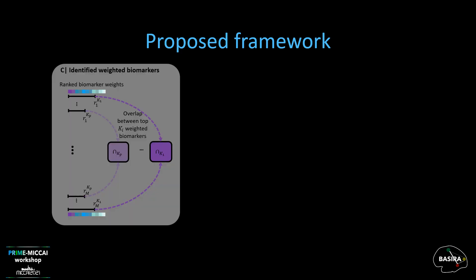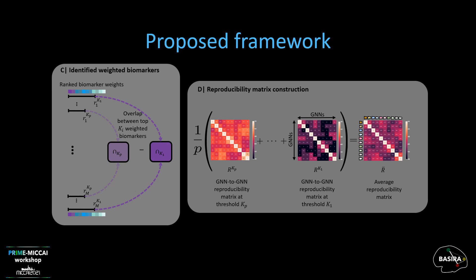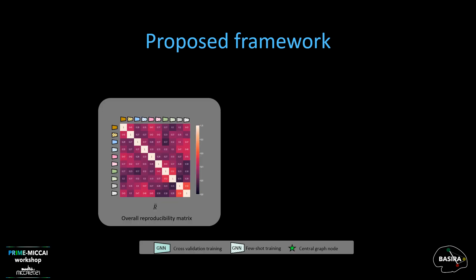The reproducibility measure needs to reflect the commonalities between two models given their learned biomarker weights. In the reproducibility matrix, the value in the Ith row and Jth column contains the ratio of agreements in the top-discriminative biomarkers between the two models I and J. The overall reproducibility matrix is calculated by averaging the resulting matrices over the different thresholds. The resulting overall matrix represents the reproducibility graph where the nodes and edges are the models and their pairwise reproducibility scores, respectively.